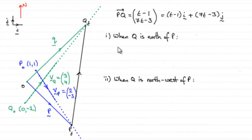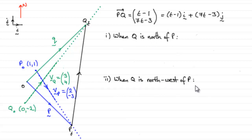For part C, part 1 we've got to find the time when Q is north of P, and in part 2 we've got to find when Q is northwest of P — this one is quite tricky. But first of all we'll do part 1: when Q is north of P.